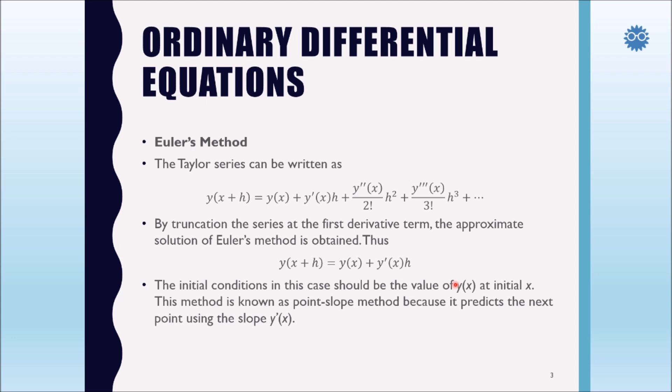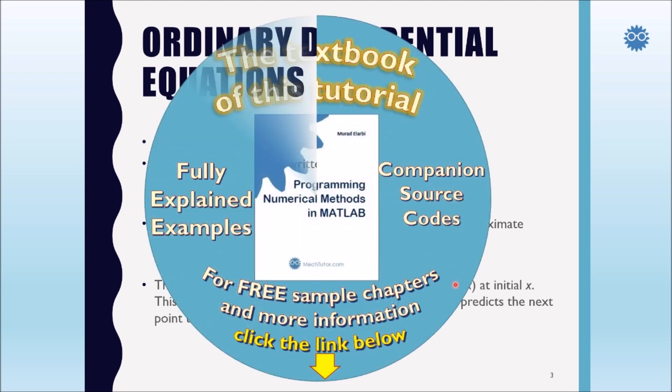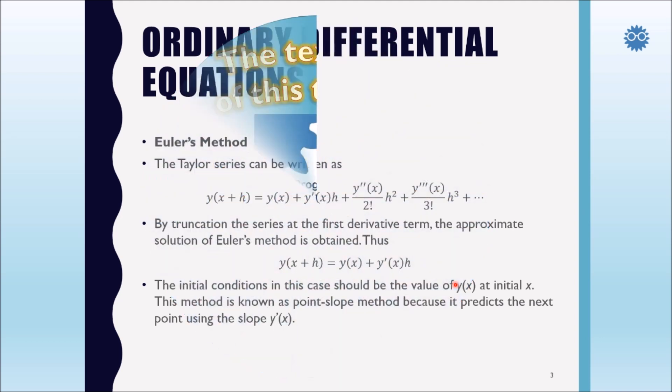This method is known as point-slope method because it predicts the next point of the solution at the slope y prime x, because we know that y prime geometrically represents the slope of the line tangent to the curve of the function at point x.